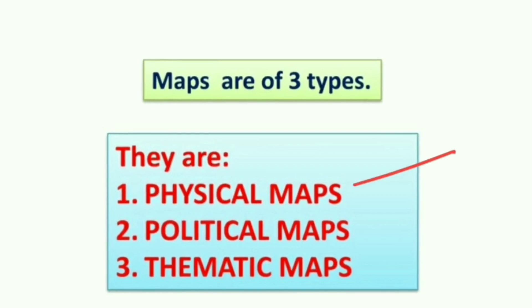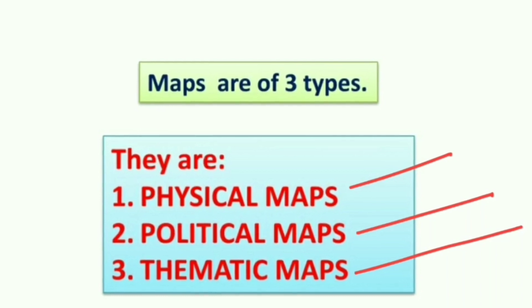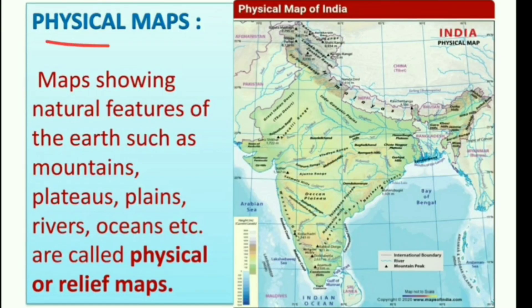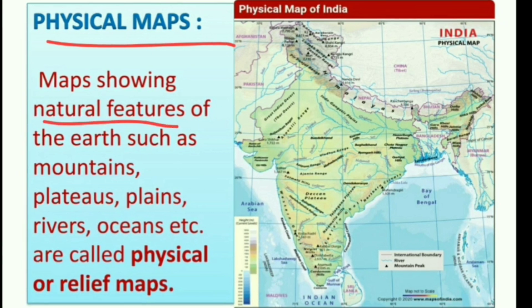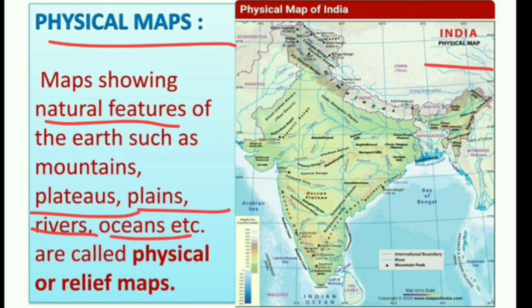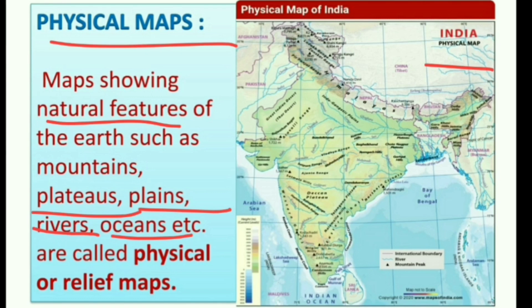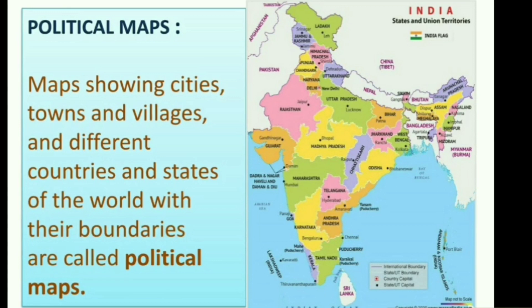Maps are of three types: physical maps, political maps, and thematic maps. The first type is the physical map. In a physical map, the natural features of the earth are shown — features like plains, plateaus, rivers, oceans and so on. In the picture of the physical map shown here, natural features like rivers and mountains are clearly marked.